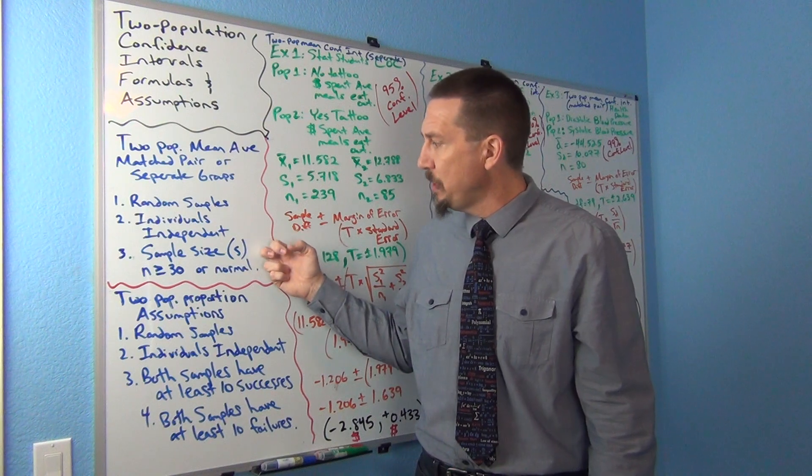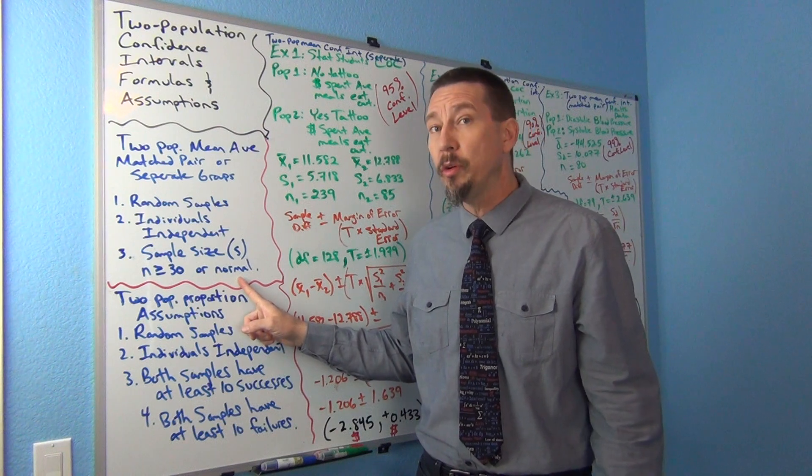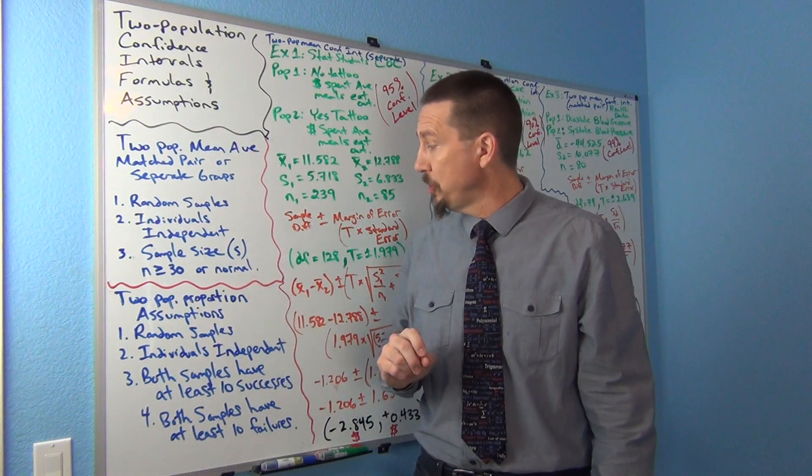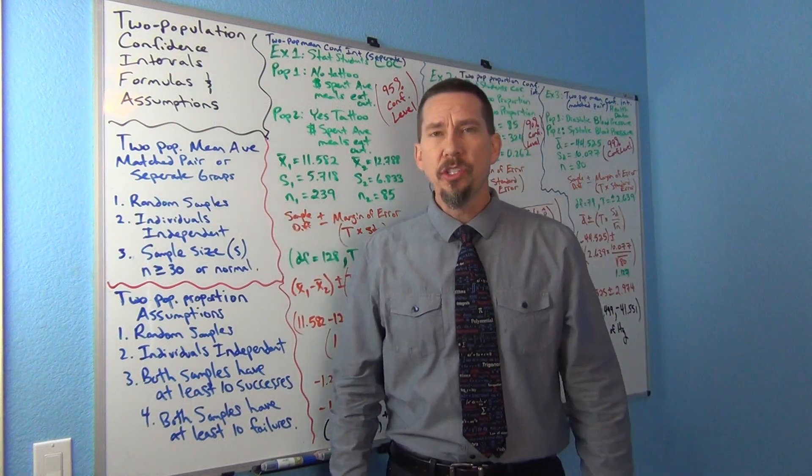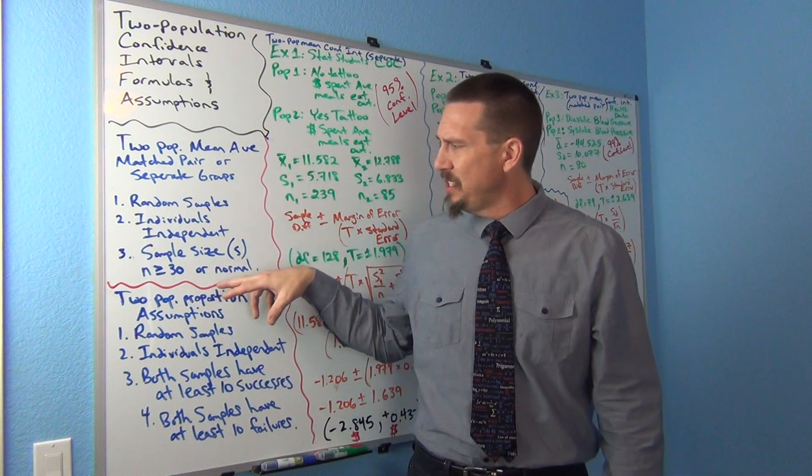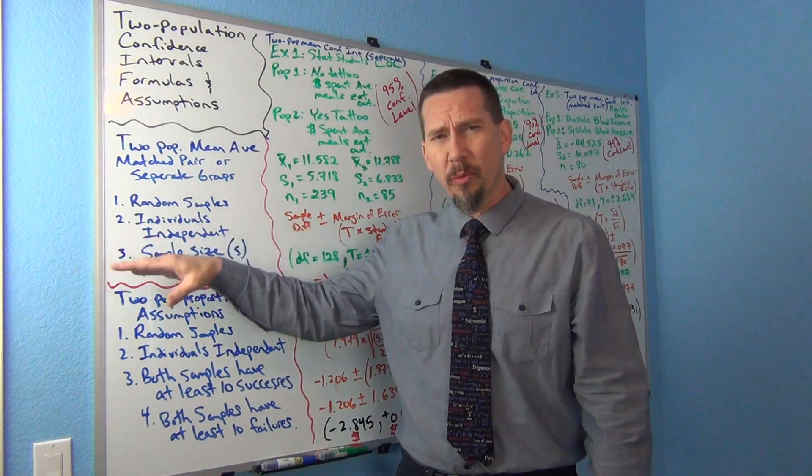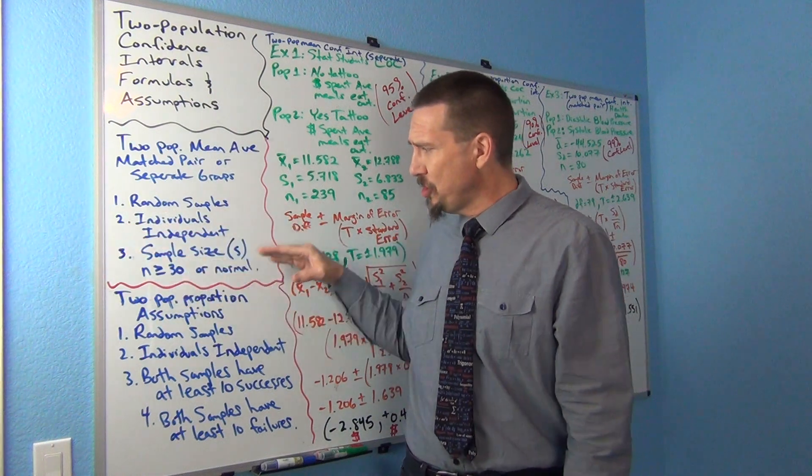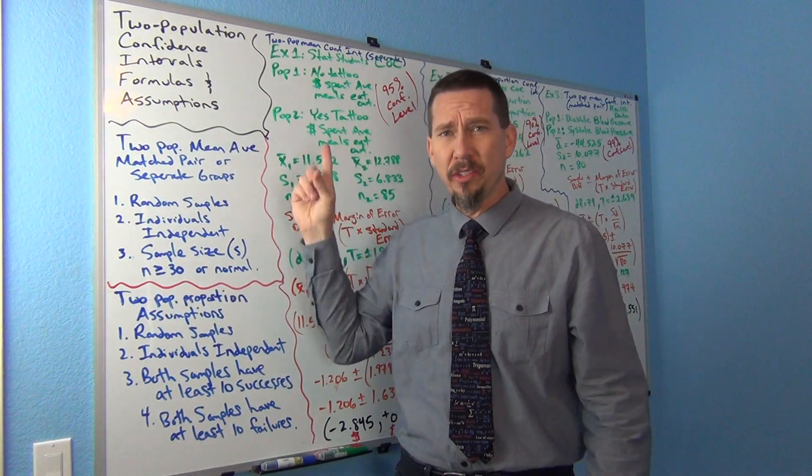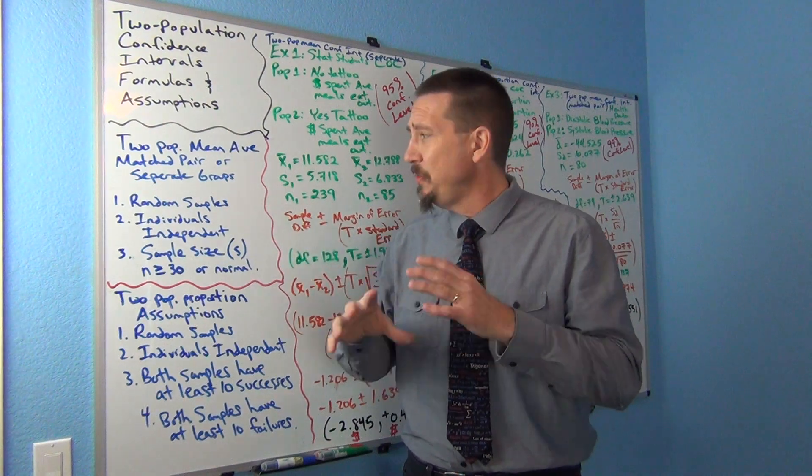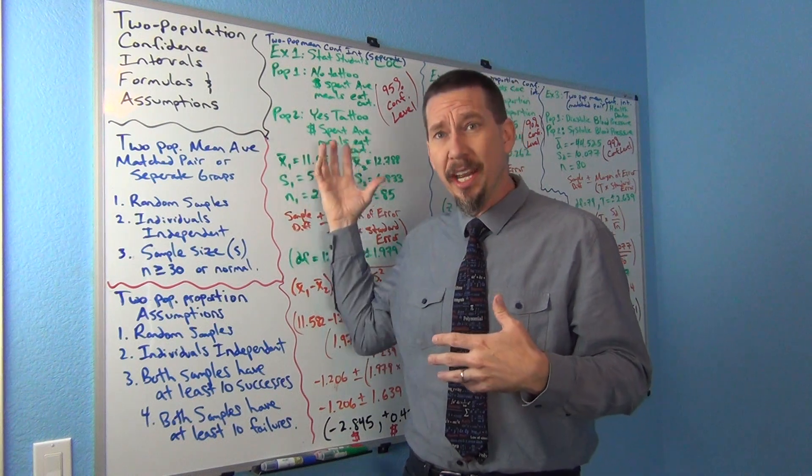And then we'd like both of the samples to be a sample size of 30 or have a normal or bell shape, the sample to have a normal bell shape. Sometimes they call that normally distributed. So the idea here is with these assumptions, we talked about these before with the central limit theorem and this is sort of making sure that the sampling distribution comes out normal, which is what a lot of these formulas are designed around normal sampling distributions. And if your sampling distribution does not come out normal, a lot of these formulas sort of break down. They're not as accurate.